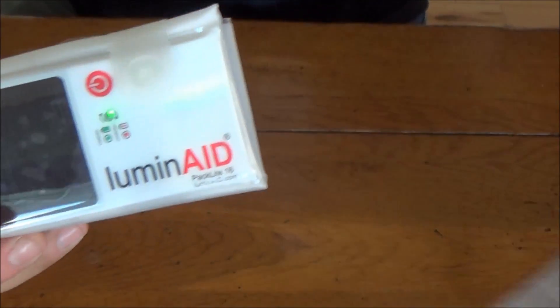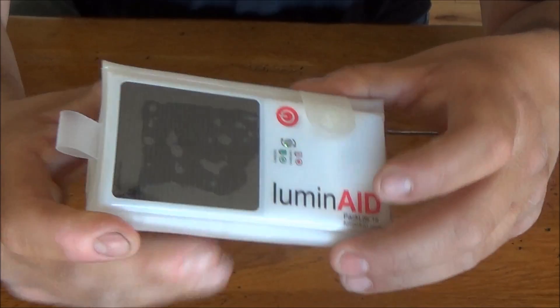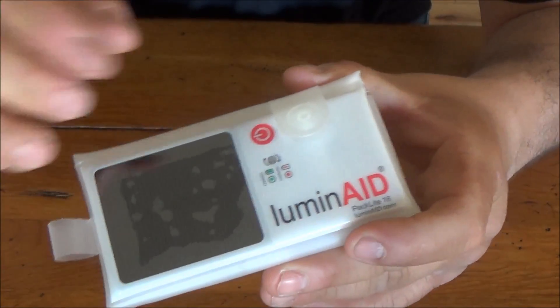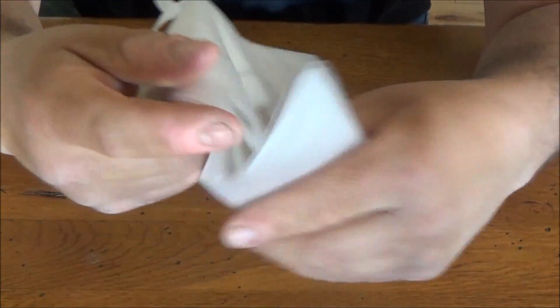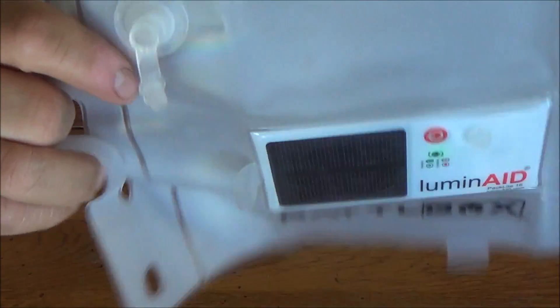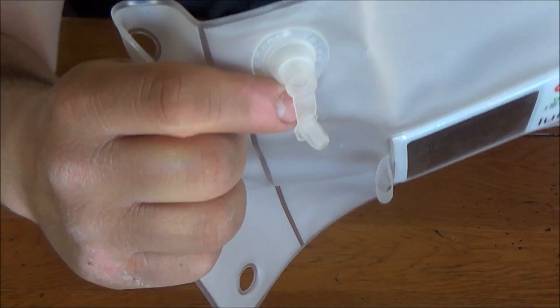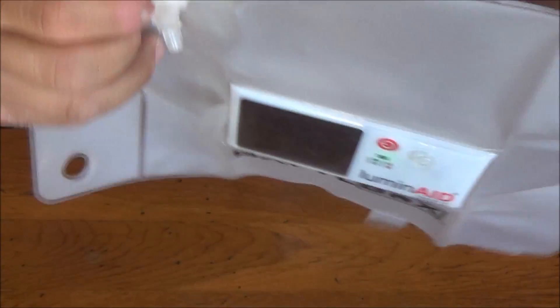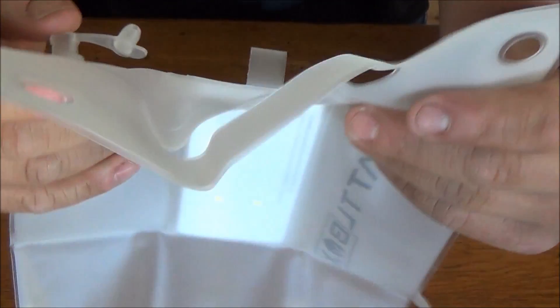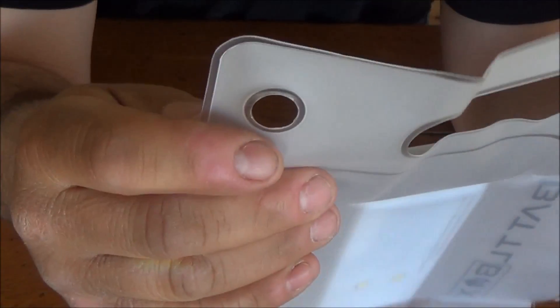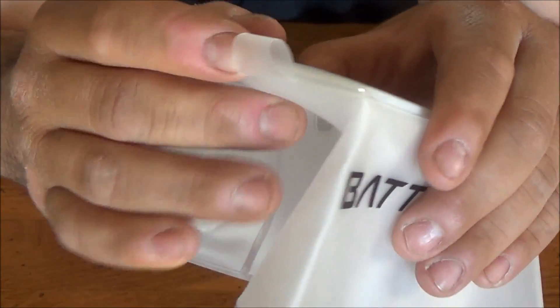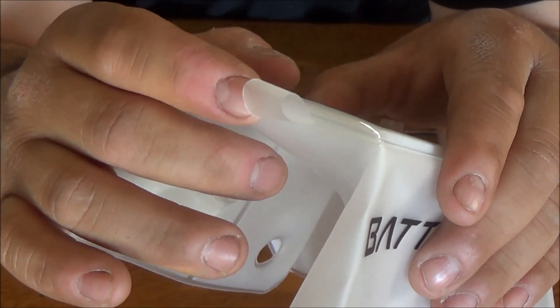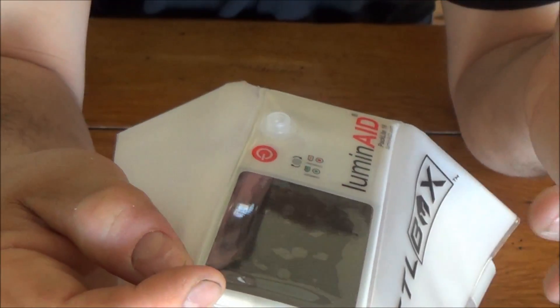It's waterproof and it floats. Basically what you would do to make it float is take this tab off and unfold it and right here you blow into that and you fill it up. The other thing you have is a handle and you got two holes that you use for carabiners but you also have a loop here so when it's closed you can actually put it on your pack while you're walking around during the day and actually charge it.